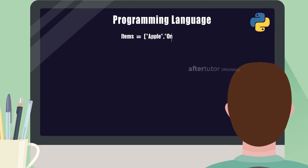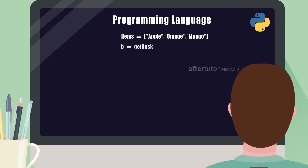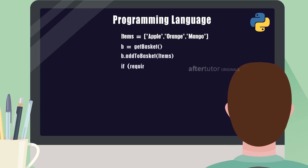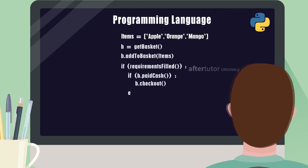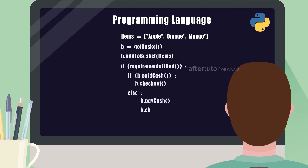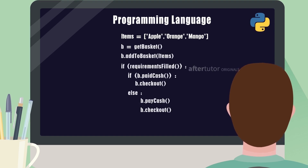We will start with getting the basket, which is an instruction statement. Next is to fill the items until our requirements are fulfilled, which is a control statement. The final step is to pay the cash, where a set of instructions is followed and can be expressed as a function called paycash.